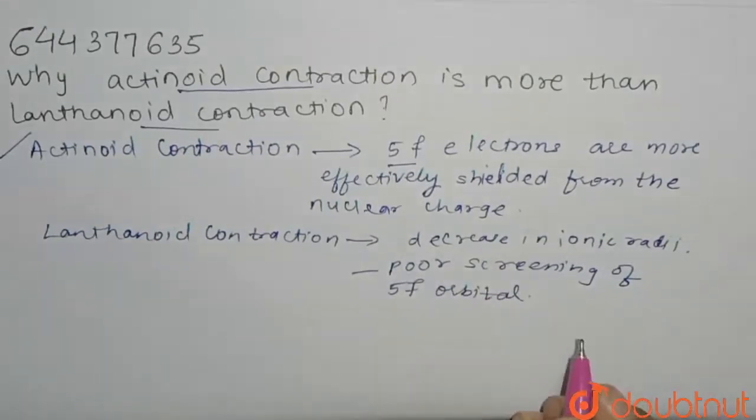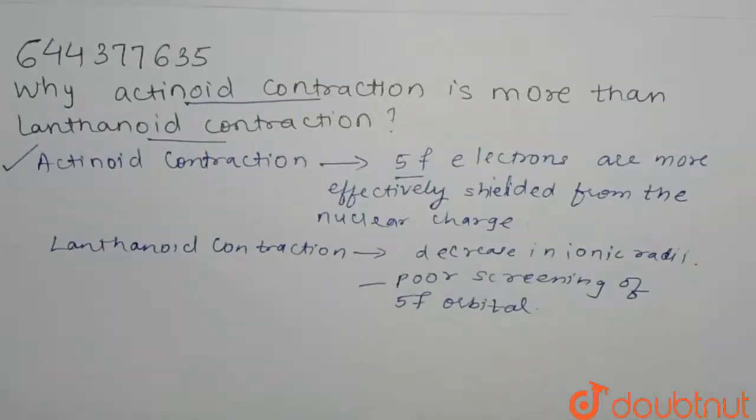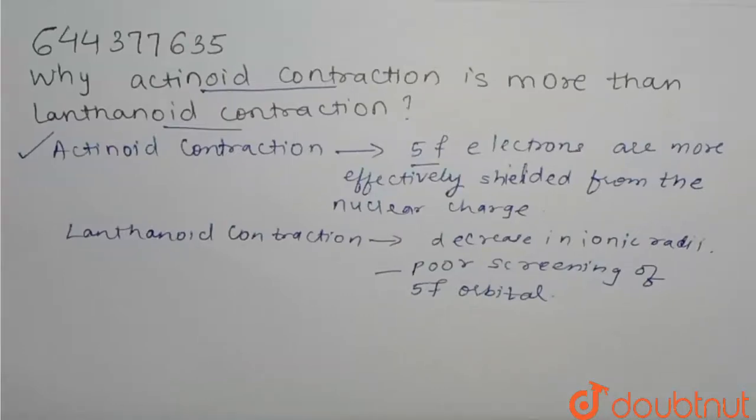So if we see here, our actinoid contraction is more than lanthanoid contraction. So this is the reason: 5f electrons are more effectively shielded in actinoid contraction.